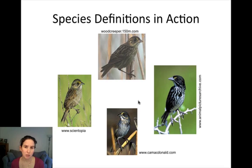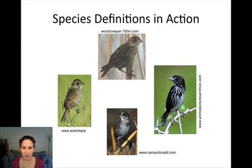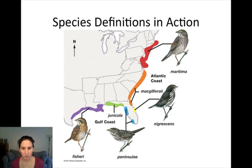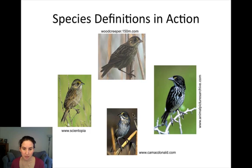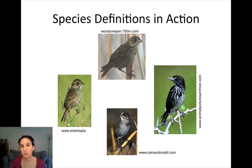Think about how you might consider these different populations as separate or the same species. If you look at this one over towards the right, you can see it's blacker in color with a lot of mottling on its chest and just a tiny bit of yellow in front of its eye. Another population is a little browner, not as black, with a more distinct yellowish stripe at the base of its eye. There are lots of little differences, and most zoologists have recognized those as subspecies differences, not species differences.